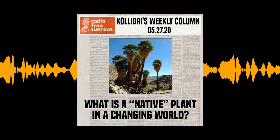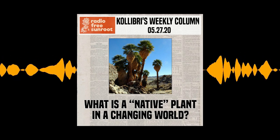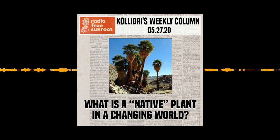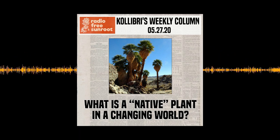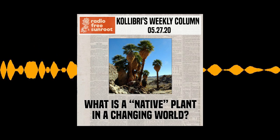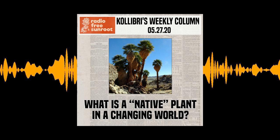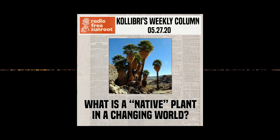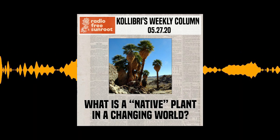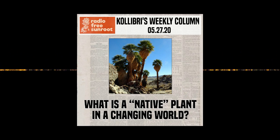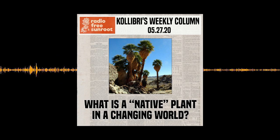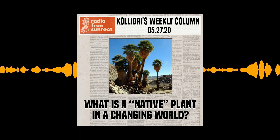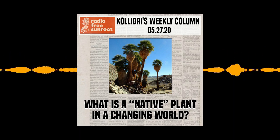Fossils and phylogenetics are two things that can show us where plants used to live and where they come from. Such information raises questions even as it illuminates. For example, when Spanish colonists arrived in California in the 18th century, Coast Redwoods—known botanically as Sequoia sempervirens—grew in a strip nearly 500 miles long and 5 to 47 miles wide, from what is now Monterey County in the south to Curry County, Oregon in the north.